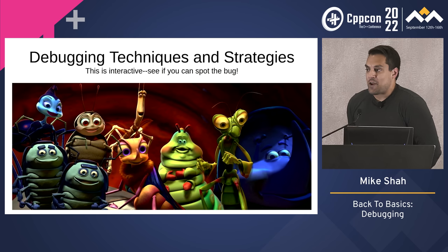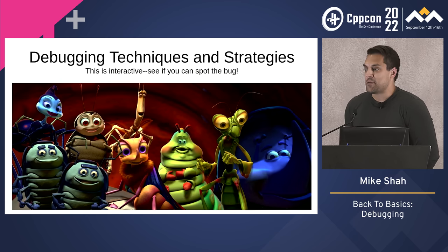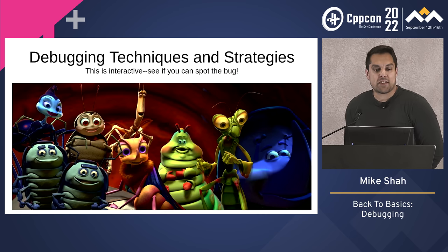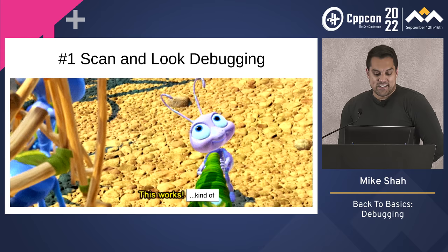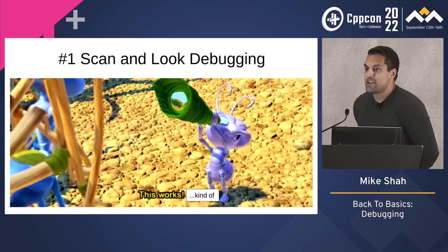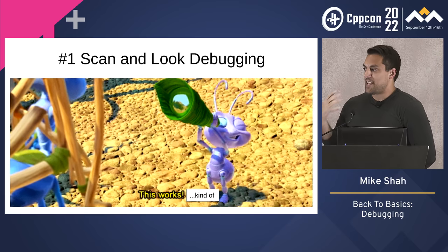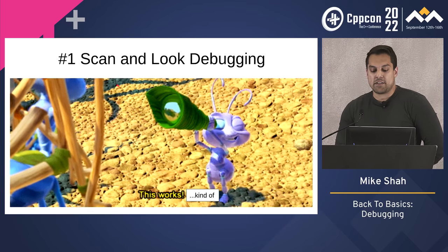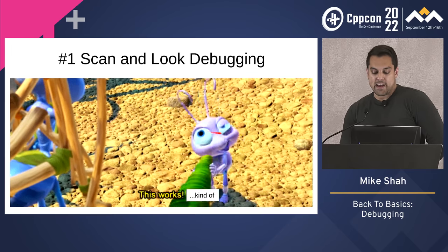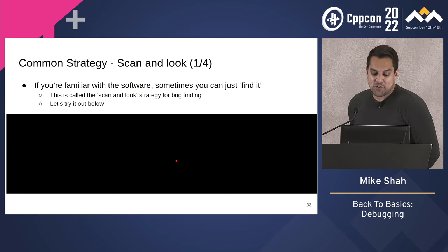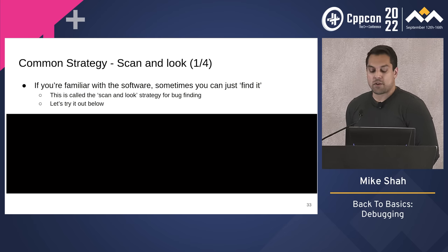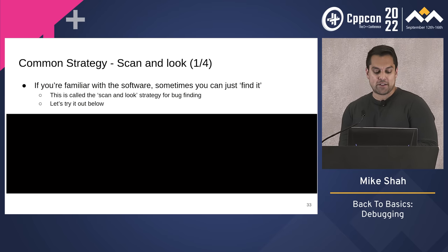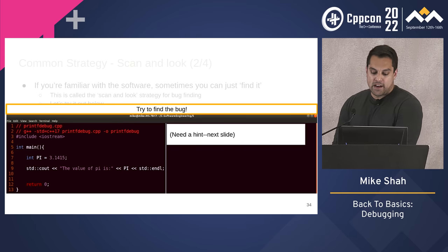A little bit on debugging techniques and strategies, where to get started. This will be interactive — you'll see if you can spot some bugs. These are simple programs that fit on a slide, but they uncover the kinds of bugs you mentioned. The first strategy is 'scan and look' debugging — if you're familiar with the software, maybe you're the lead developer or a one-person team, you can just kind of find the bug. Let's try it out. Give everyone a moment to think and see if you can find the bug.